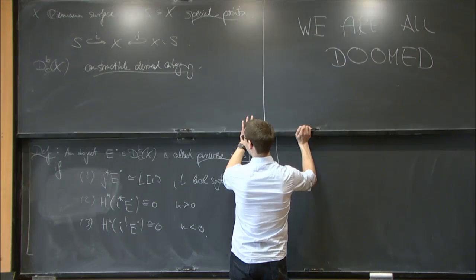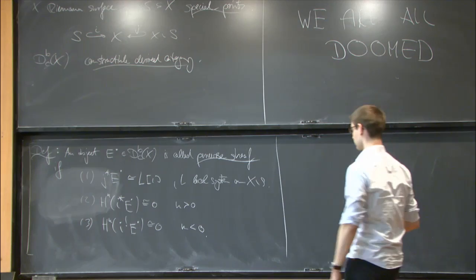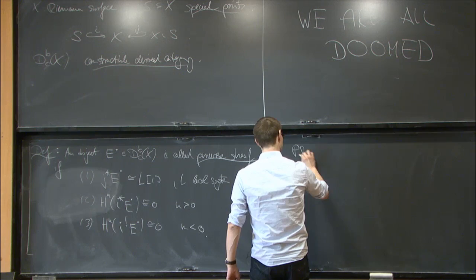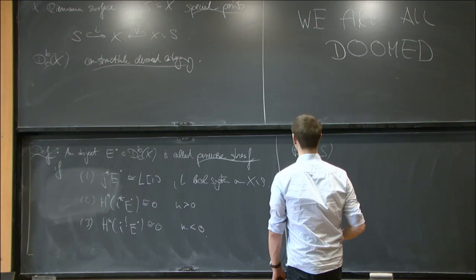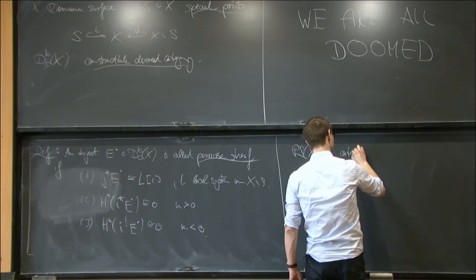In particular, because it's the heart of a t-structure, it is actually an abelian category — that's one of the first interesting features. We have this category: perverse sheaves on the Riemann surface x with respect to the chosen special points S.